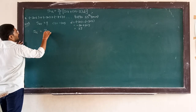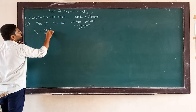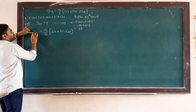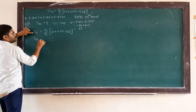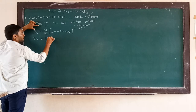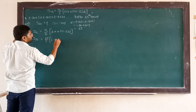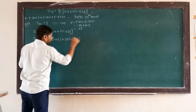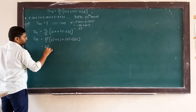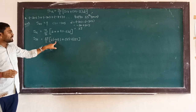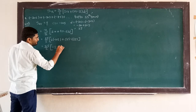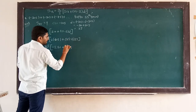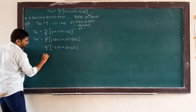Starting from the formula: Sn is equal to n upon 2 times 2a plus n minus 1 times d. Here we find the sum of 15 terms, so n is equal to 15. Substituting: 15 upon 2 times 2 multiplied by minus 105, plus n minus 1 times d. That gives 15 upon 2 times minus 210 plus 14 times 15.